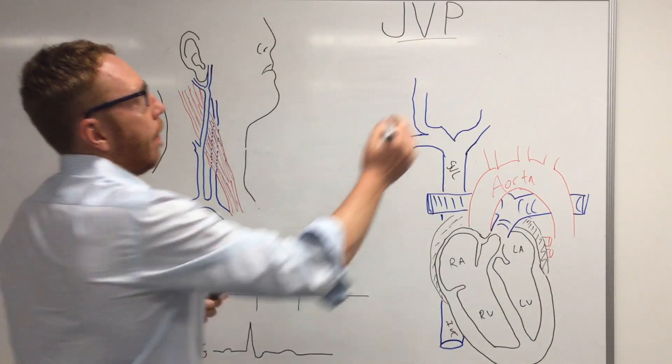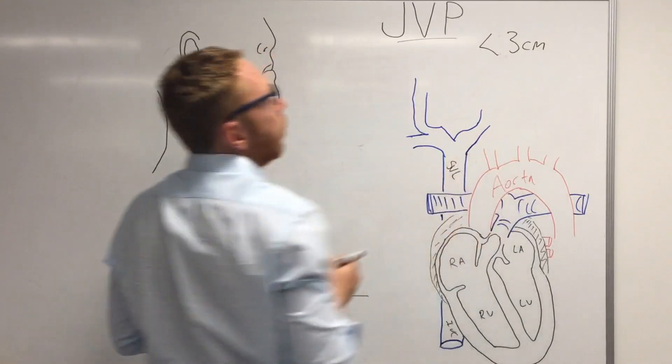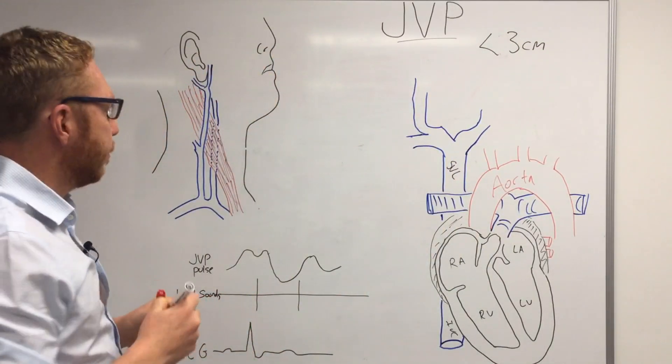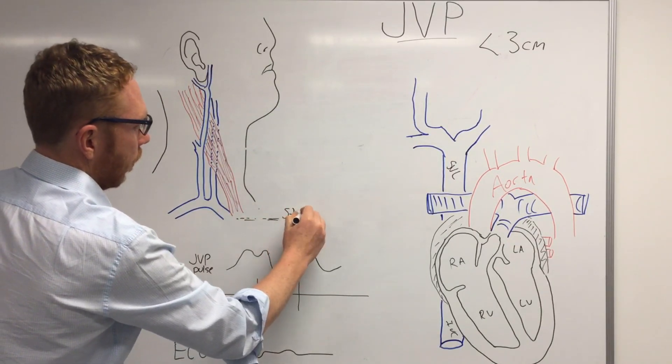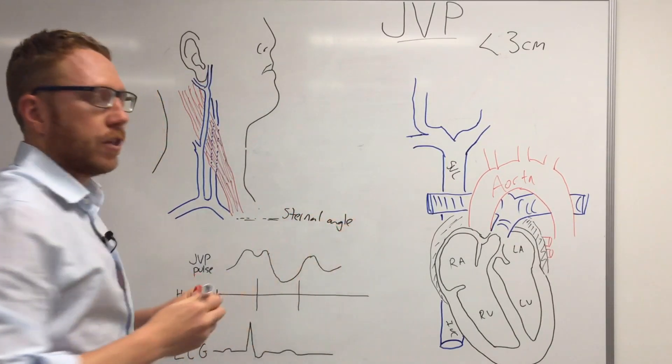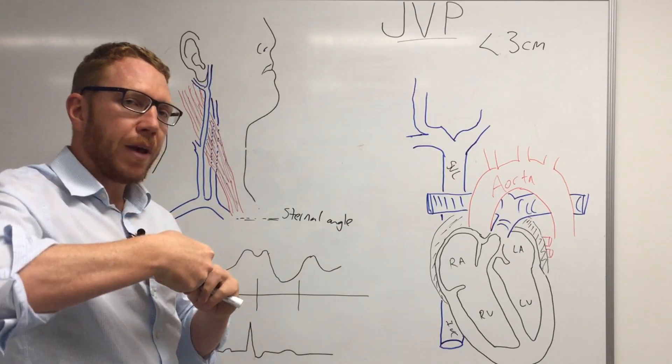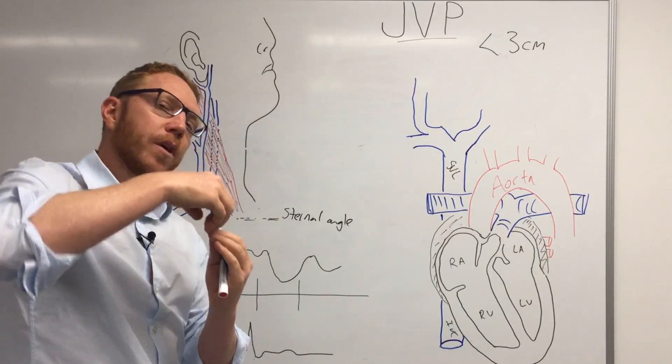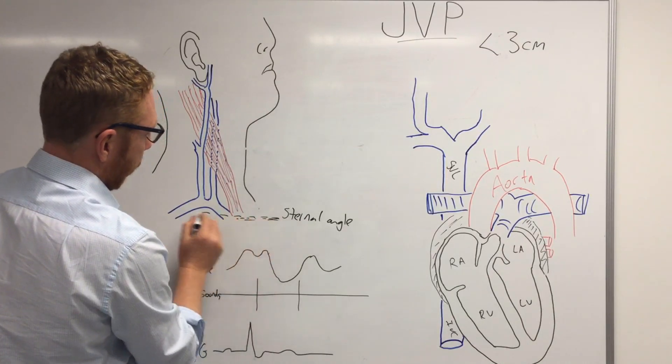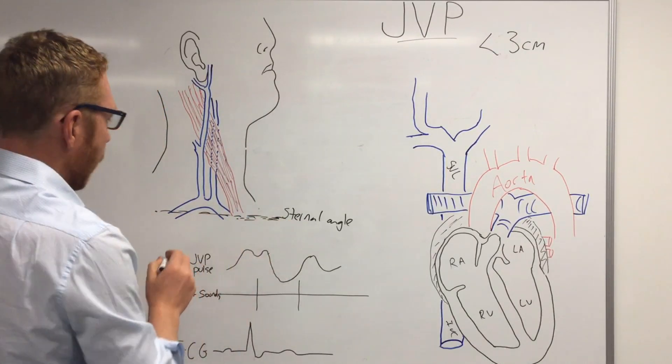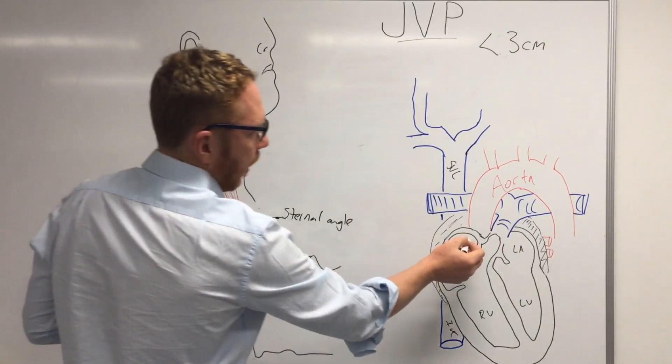Now normally it should be less than three centimeters. So where's that three centimeters measured from? Well it's coming off the sternal angle. The sternal angle is essentially where the manubrium and the body of the sternum meet and has a slight angle to it, and that's called the angle of Louis. It's this angle here, this sternal angle, which is actually five centimeters above the right atrium.